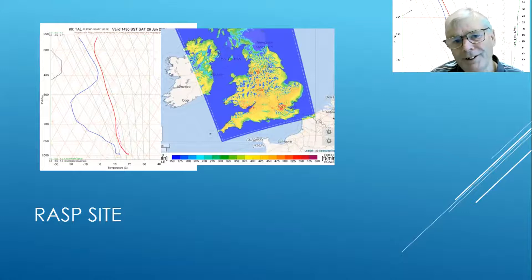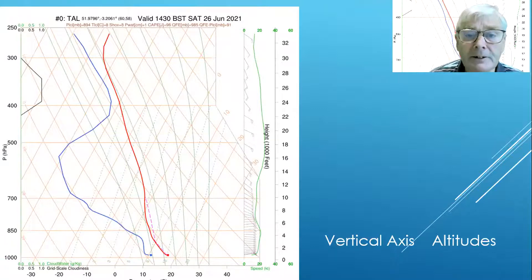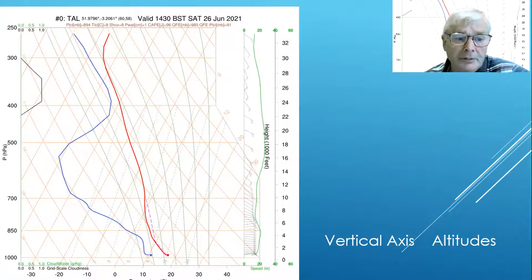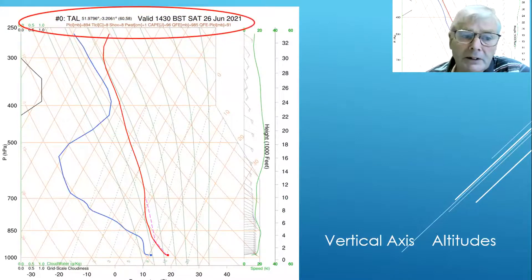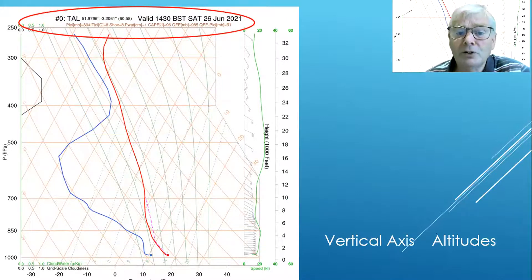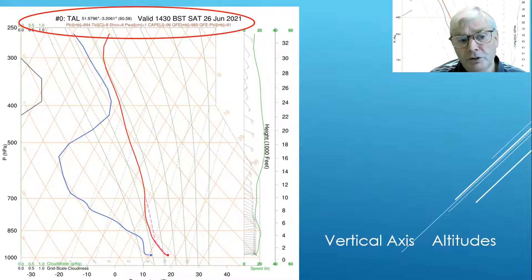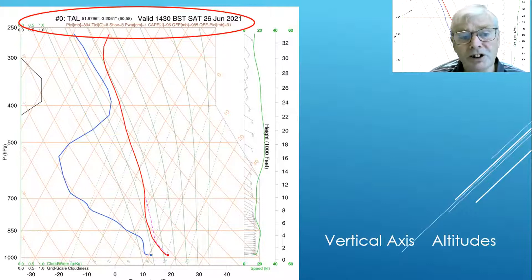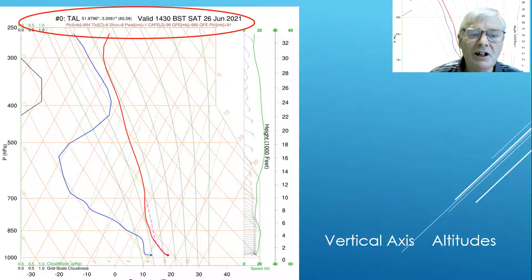We'll now look at the tephigrams we can get on the RASP site. For this example I've used Talgarth. You can see the date at the top: Talgarth, valid at 14:30 British Standard Time on Saturday the 26th of June 2021. You won't be the first to look at a weather forecast and be looking at the wrong one — so some advice: check the date before you go too much further.